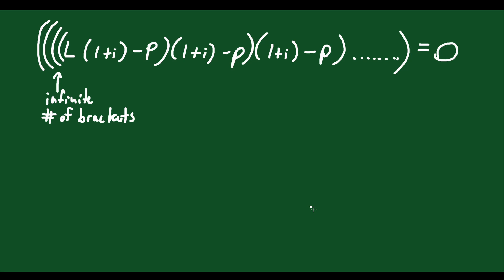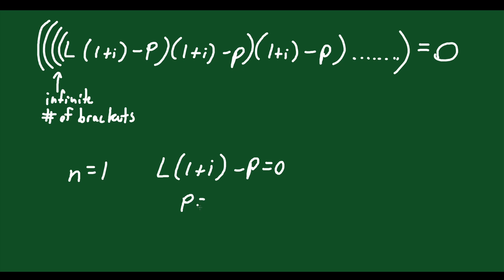Let's work through examples. If n equals 1, we have L(1 plus i) minus P equals 0, so P equals L(1 plus i). Dividing both sides by (1 plus i), we get L equals P divided by (1 plus i). So for one payment, the loan amount equals P over (1 plus i).